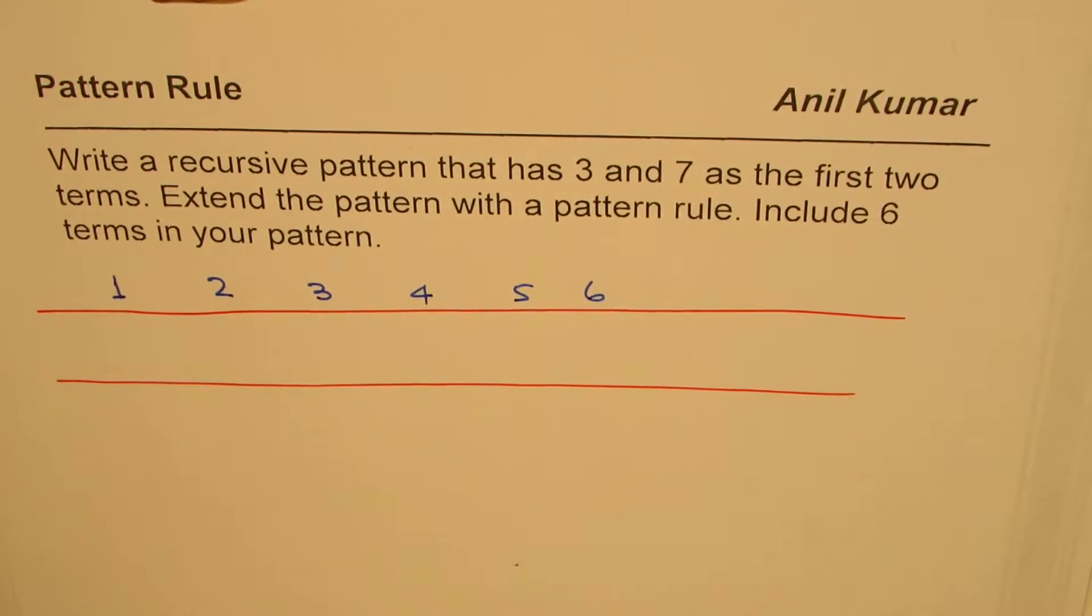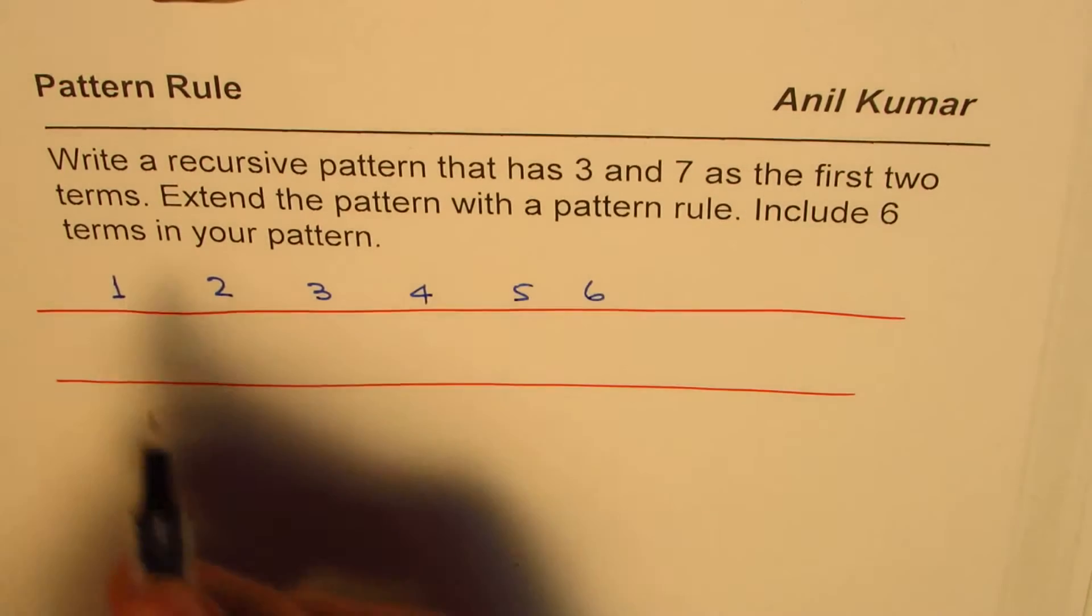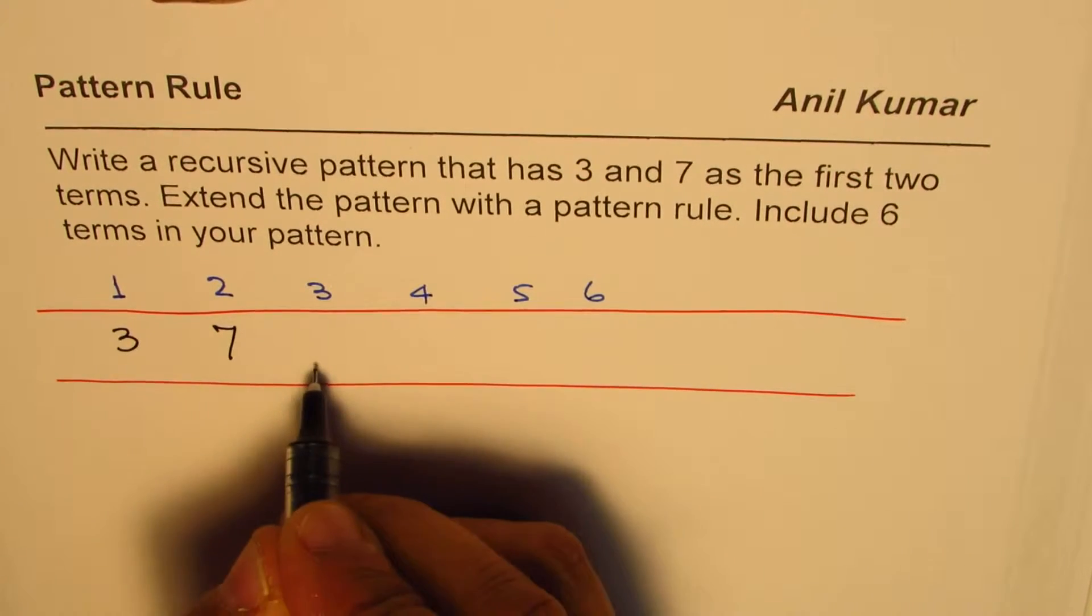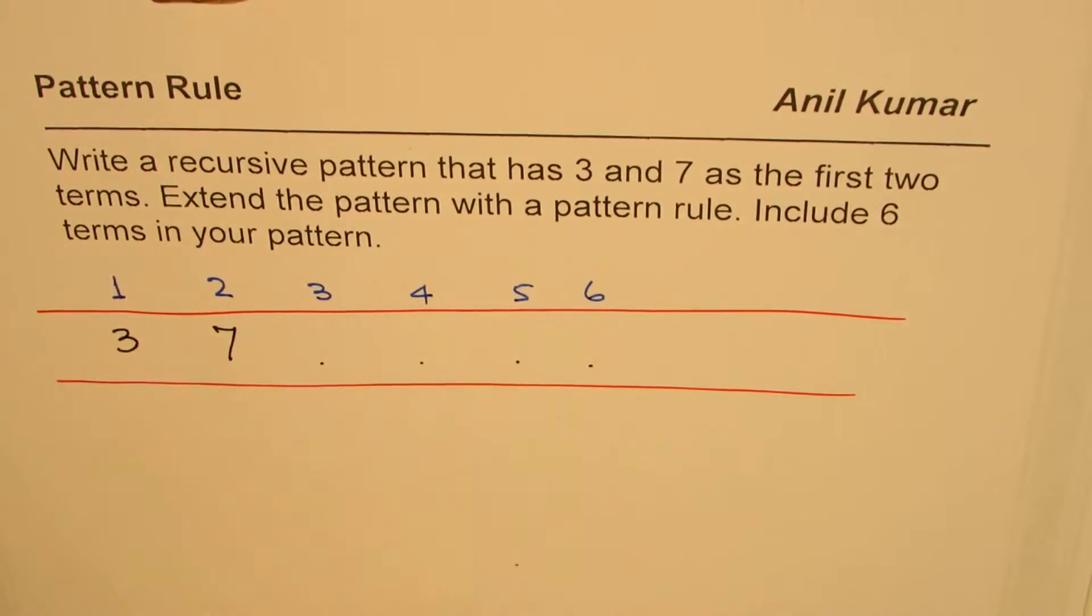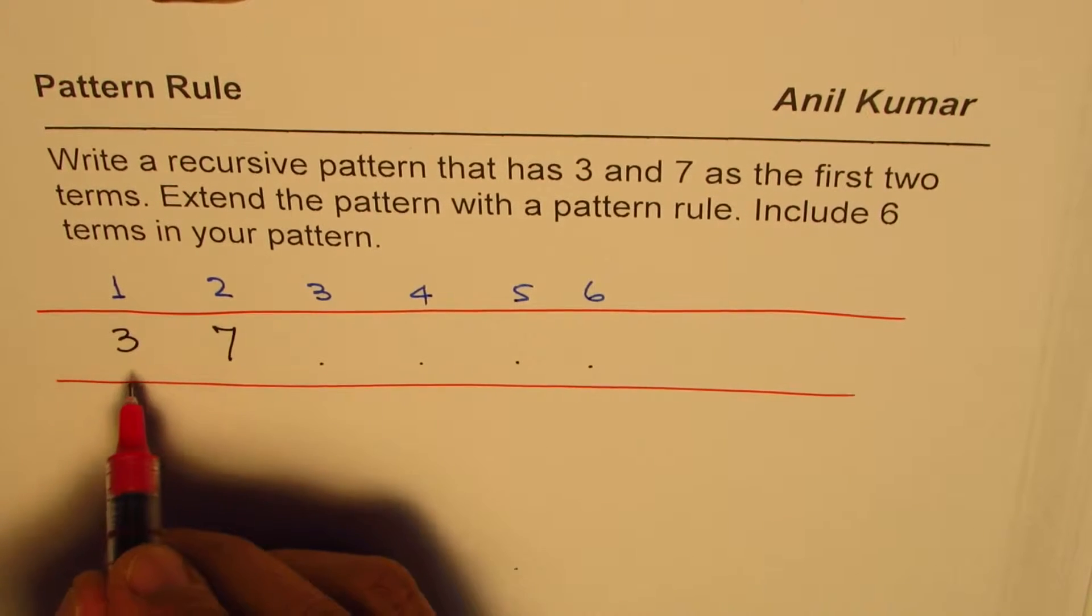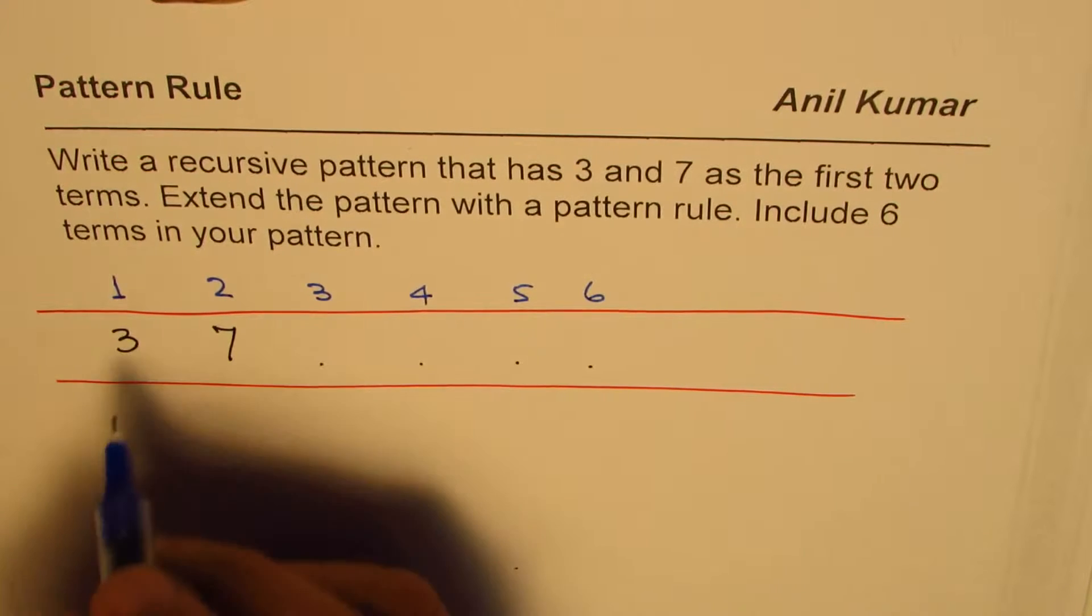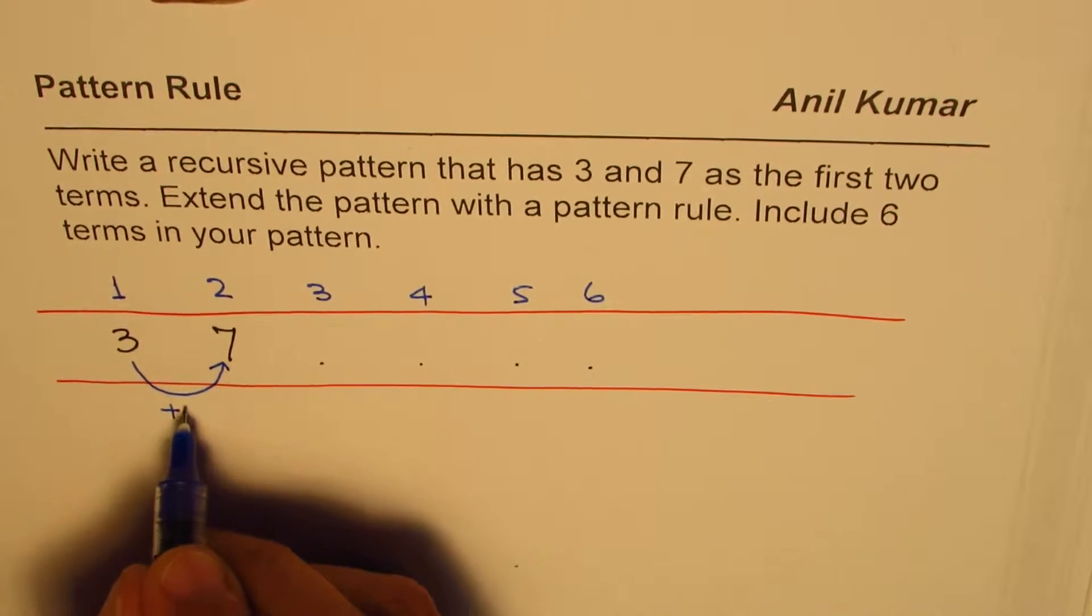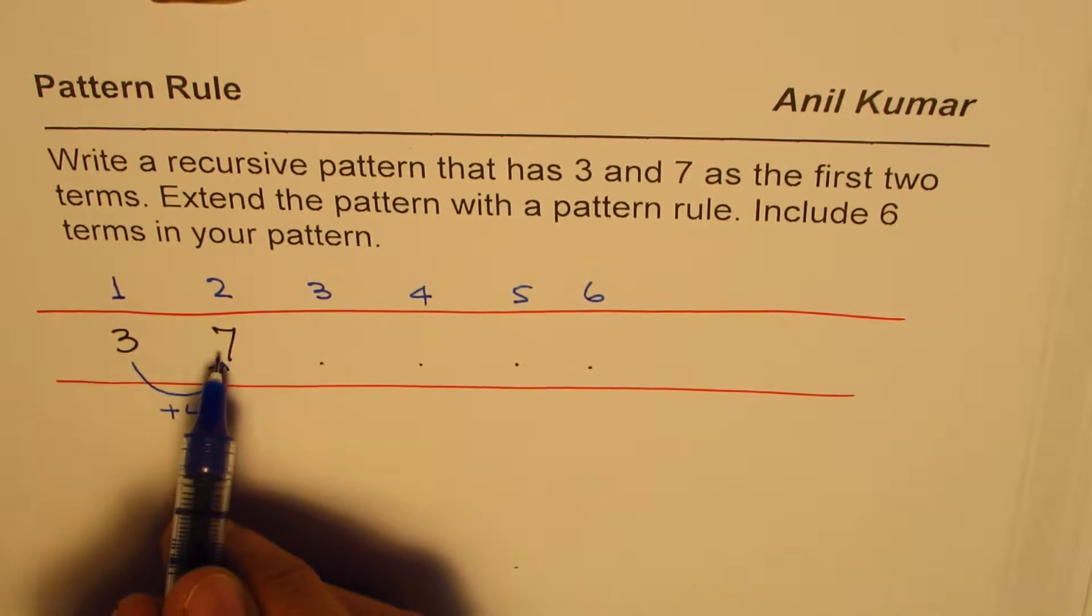So let me write numbers one, two, three, four, five, six and the numbers which we have are: first is three, and the second one is seven. Now we have to figure out what could be the other numbers. As you can see here, we could have a pattern of if you go from three to seven we can add four, correct? So if I add four I get seven.